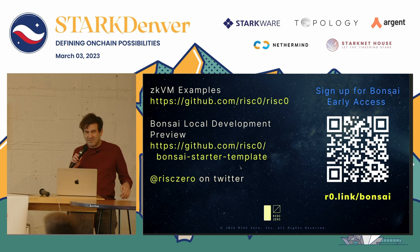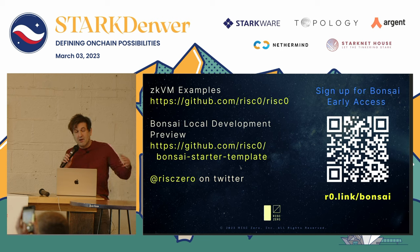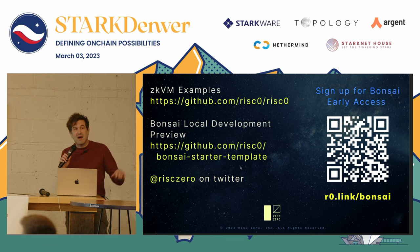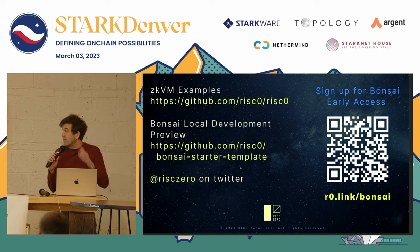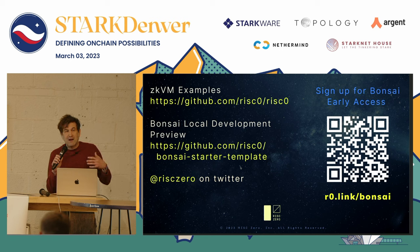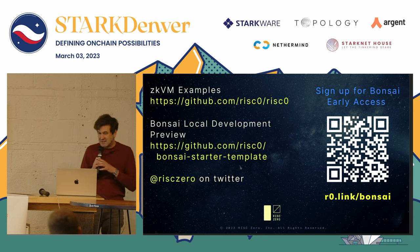We currently have the ZKVM — it's basically ready to use. It has a bunch of examples, including the chess example mentioned earlier. You can go download it, make proofs, and verify proofs. The entire prover infrastructure is entirely open source, even the GPU acceleration. The Bonsai network is something we are just now beginning to release. You can sign up for the early access program, and we'll be slowly rolling that out. We intend to have a public release of the Bonsai Proving Network in the not-too-distant future, and will continue to decentralize from there.